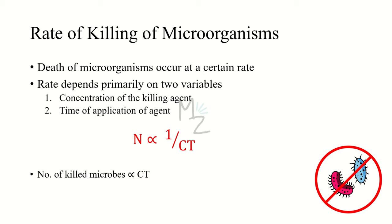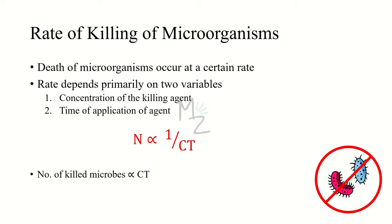The rate of killing of microorganisms depends primarily on two variables: the concentration of the killing agent (C) and the length of time the agent is applied (T). The number of surviving organisms (N) is inversely proportional to C and T collectively referred to as the dose (CT). Alternatively, the number of microorganisms killed is directly proportional to CT. Survivors are measured because they are easily counted by colony formation.